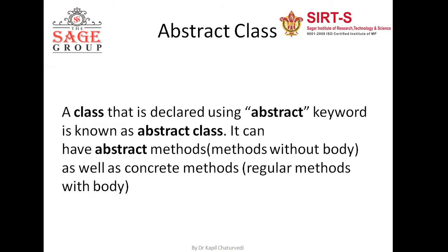Then we discussed the concept of abstract class, in which we discussed that if a class contains at least one abstract method, then the class is known as abstract class. The abstract method is a method which has no body. Basically, abstract class is a combination of abstract and non-abstract methods.